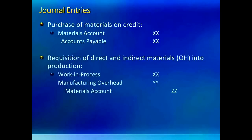The next typical journal entry is to transfer direct materials into the work in process account and to transfer indirect materials into the manufacturing overhead account. You know from T-accounts that direct material goes out of the materials account into the debit side of work in process. That gives you the journal entry: debit work in process and credit materials. If you have indirect materials, you transfer them into manufacturing overhead — they go out from materials into the debit side of manufacturing overhead. So the journal entry is to debit manufacturing overhead and credit materials.